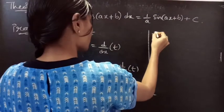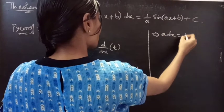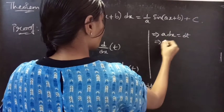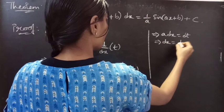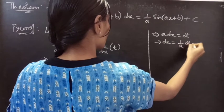You would write this as a into dx equals to dt. Then, dx equals to 1 by a into dt.